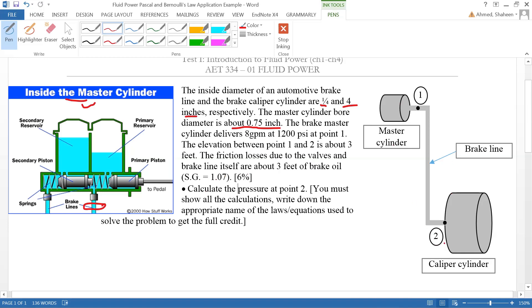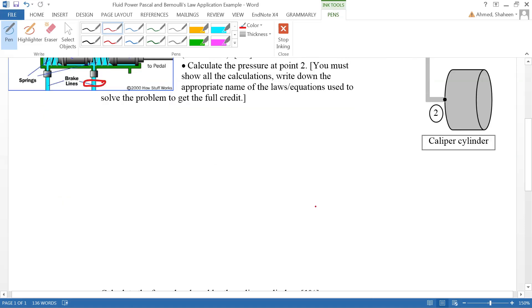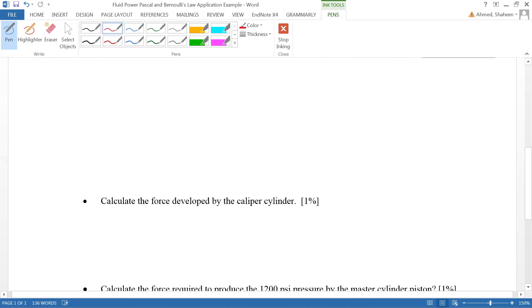These lines are about three feet high. The master cylinder is sitting about three feet high compared to the brake caliper cylinder, and there is a three-foot frictional loss between point one and point two. The first question asks to calculate the pressure at point two.